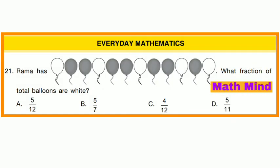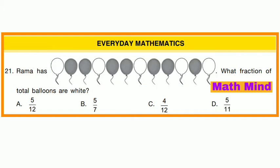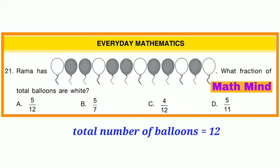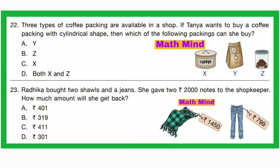Question No. 21: Ram has some balloons. What fraction of the total balloons are white? Total number of balloons is 12. White balloons are 5. So the fraction of white balloons = 5/12. Option A is correct.